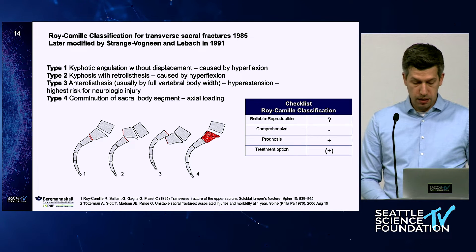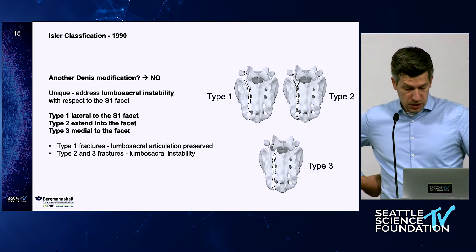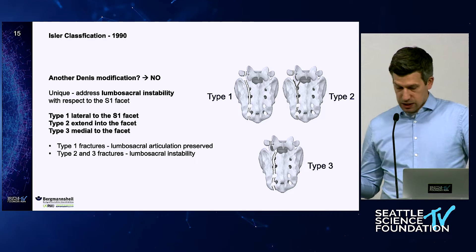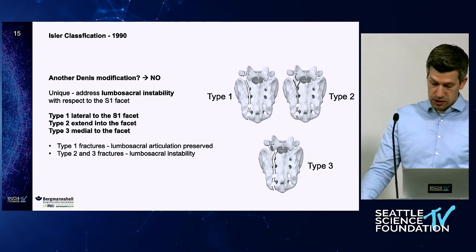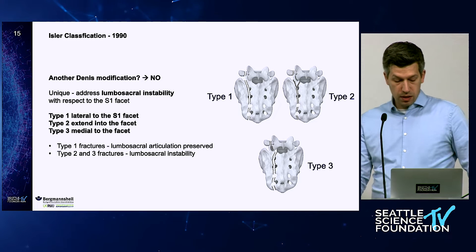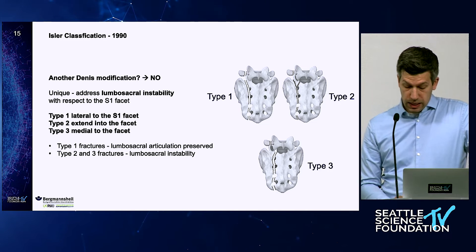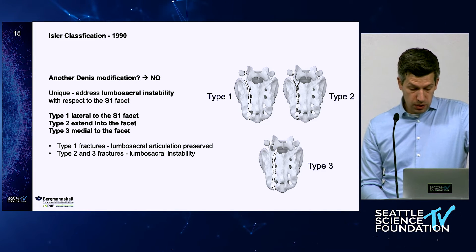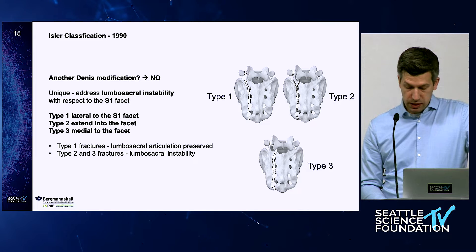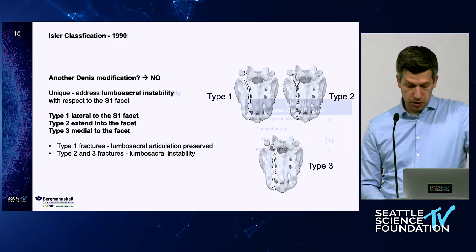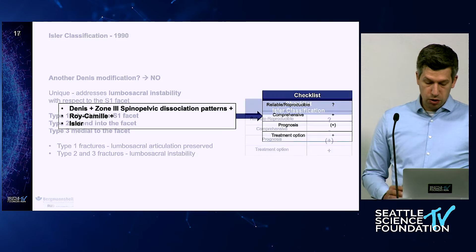Another classification by Isla mainly addresses lumbosacral instability — which is further critical information for understanding sacral fractures. If the lumbosacral articulation is preserved and the fracture extends laterally to the S1 facet, we have a lumbosacral stable fracture. If the fracture extends through or medial to the S1 facet, we have an unstable fracture. This adds another important layer to our assessment, though by itself it is not a comprehensive system.